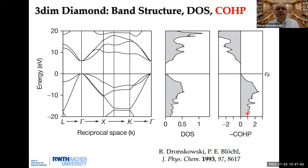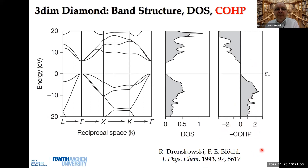You have seen the band structure and density of states of diamond. The crystal orbital Hamilton population method was invented by Peter Blöchl and myself in 1993. This method weighs the density of states with the Hamiltonian. You can then see that the entire valence part is bonding — bonding states go to the right — whereas the entire conduction part is antibonding. So all carbon-carbon interactions in the valence part are bonding, and in the conduction part they are all antibonding.